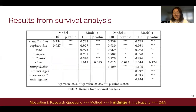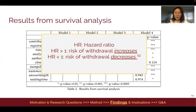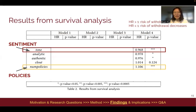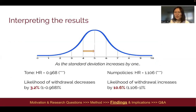Here are the results from the survival analysis. Each model has two columns: one is HR and another is P value. HR stands for hazard ratio, and HR larger than one means that the risk of withdrawal decreases as the independent variable increases. We'll take two examples from this table: one is sentiment of tone, and another is the number of policy links.